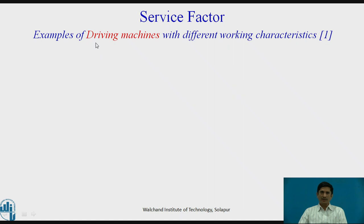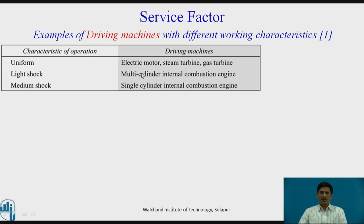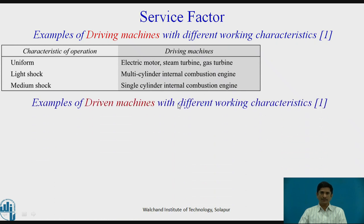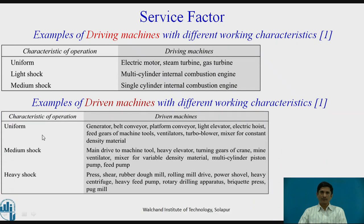Let us see examples of driving machines with different working characteristics. Under the uniform category: electric motor, steam turbine, and gas turbine. Light shock: multi-cylinder internal combustion engines. Medium shock: single cylinder internal combustion engine. For driven machines: medium shock can be for main drive to tool machine, heavy elevator, turning gears of crane. In case of heavy shock: press, heavy feed pump, rotary dealing apparatus — these kinds of driven machines fall under that category.